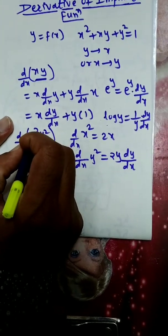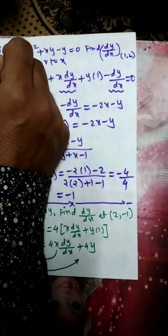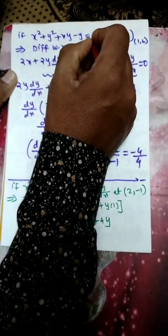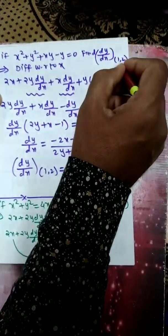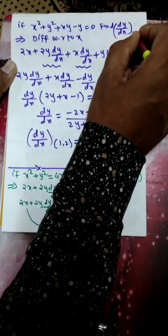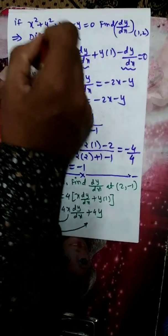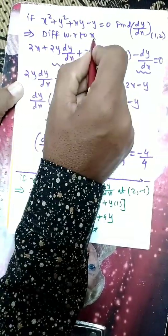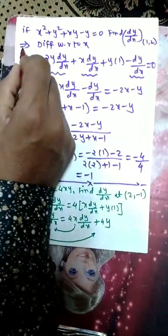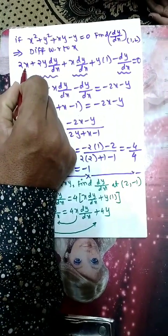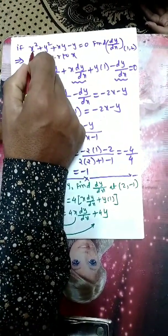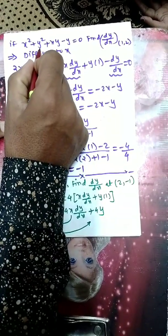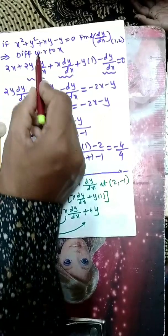We are going to find the derivative of this function. At point (1, 2), x = 1 and y = 2 in the derivative. So x² + y² + xy - y = 0. Differentiating throughout with respect to x: the derivative of x² is 2x. Now dealing with y², the derivative of y² is 2y times dy/dx.